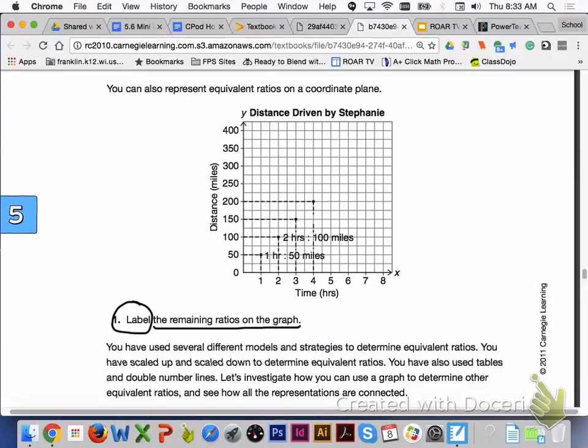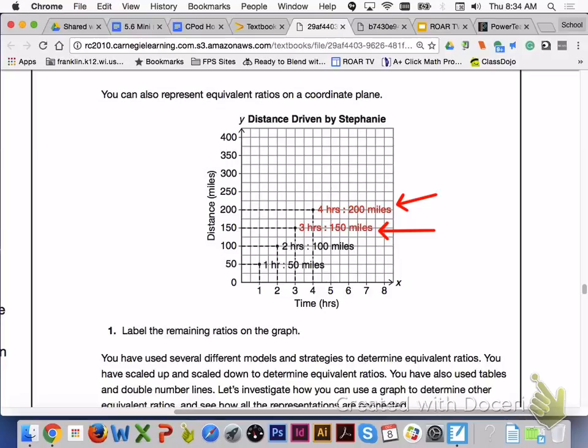You can also represent equivalent ratios on a coordinate plane. Please answer number 1 with your group members. Label the remaining ratios on the graph from the ratio table above. The first ratio that we should have labeled is 3 hours to 150 miles, and the second ratio is 4 hours to 200 miles.